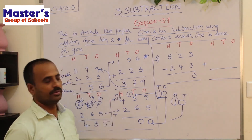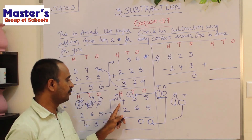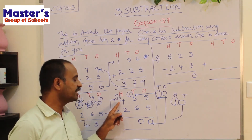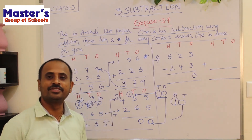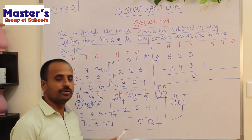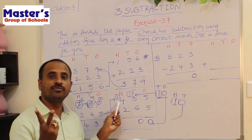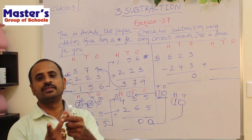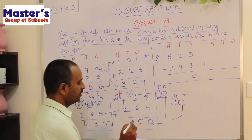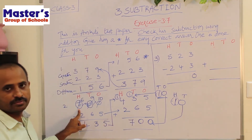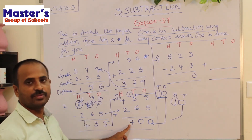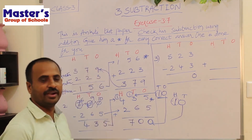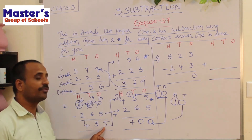Now there are three digits in hundreds place: 1, 4 and 2. Add 1 and 4: if 1 is added to 4 we get 5. Now add 5 and 2: open 2 fingers, start counting after 5: 6, 7. The answer is 7. We have got 700 — the greater number — so our subtraction is correct and our answer 435 is correct.